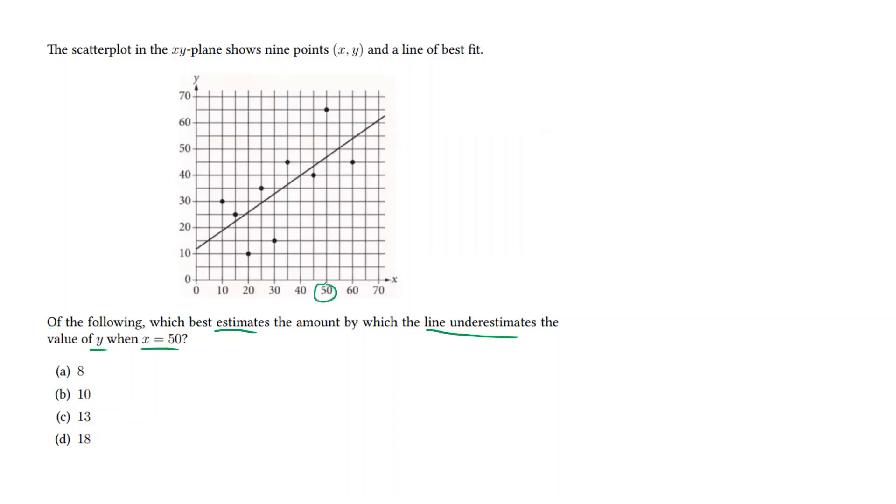Here is where x is equal to 50, and if we follow this up to where the line is, we see that the line is about there. Whereas the actual data point is up here. If we understand the scale of this y-axis, each line is an increment of 5.